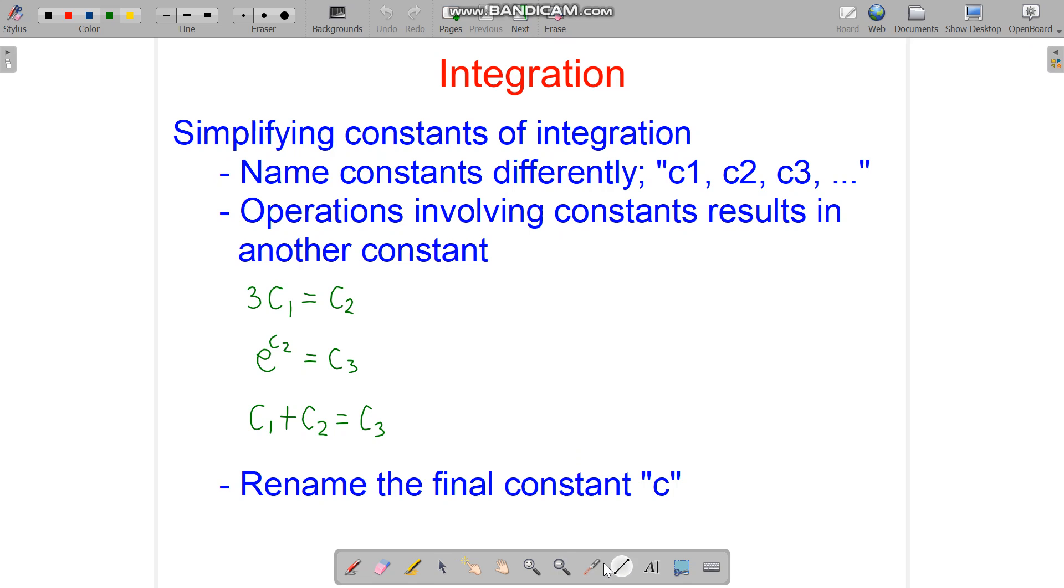So simplifying constants of integration. We can name constants differently, not always c, but c1, c2, c3. And operations involving constants result in another constant. So if we have 3 times a constant, we get another constant. e to the power of a constant gives another constant. And if we add constants, we get another constant. So we can just rename the final constant c.